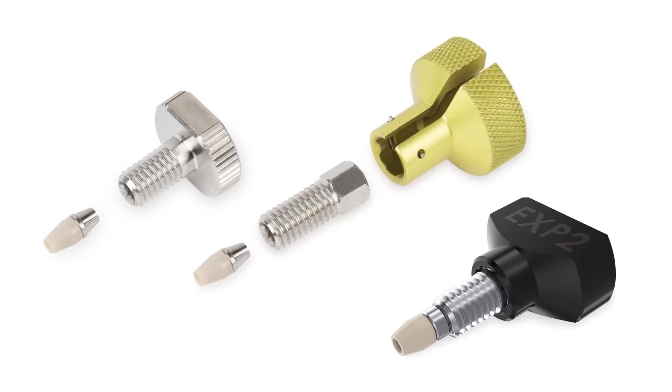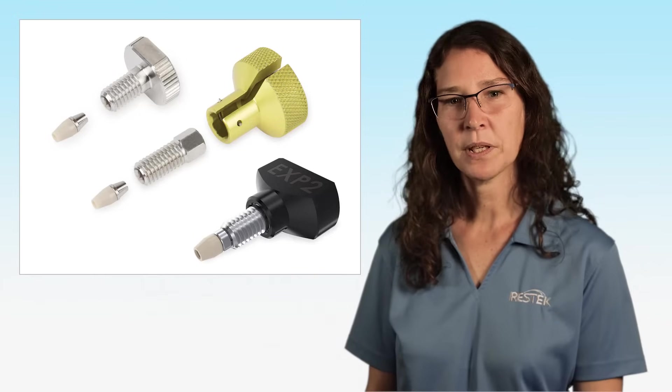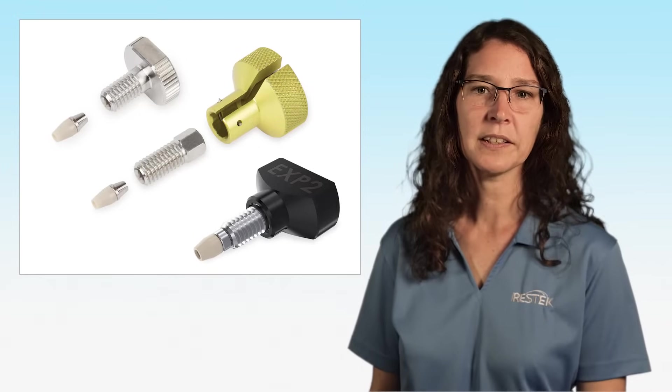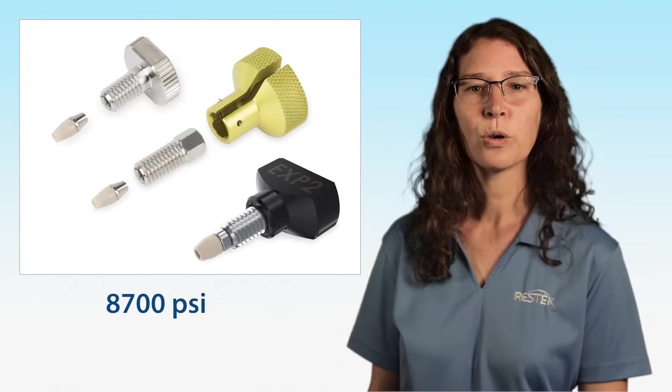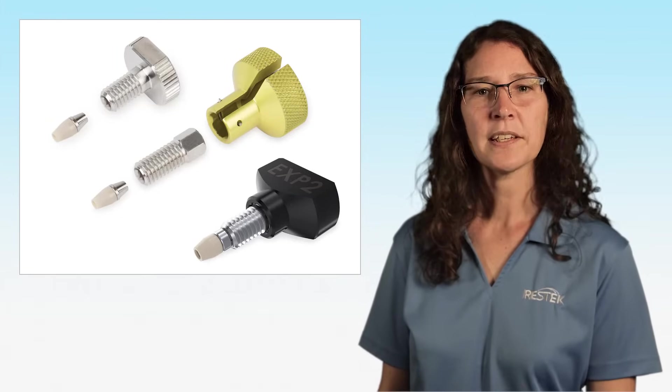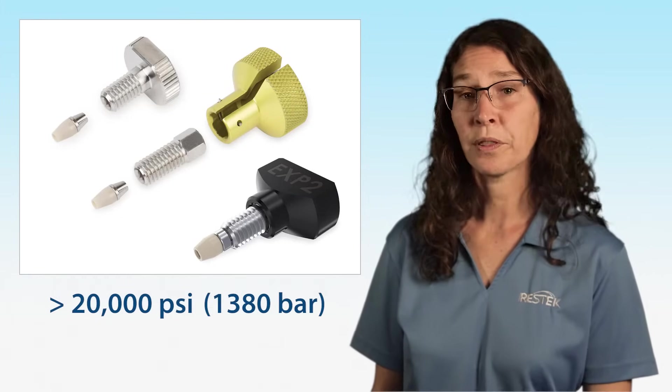EXP fittings are another option for connecting your new column to your instrument. EXP fittings are a hybrid titanium PEEK solution that allows for hand tighten connections that are effective to 8,700 psi or 600 bar, and can exceed 20,000 psi or 1,380 bar with wrenches.